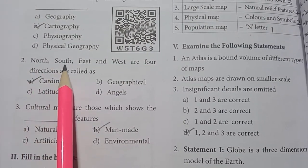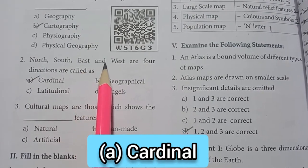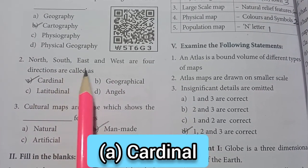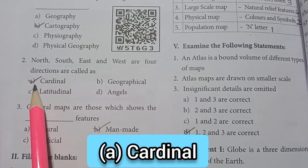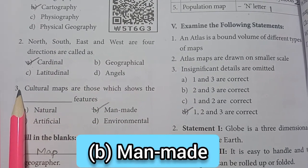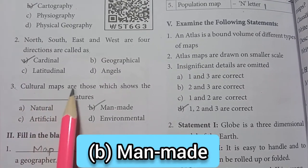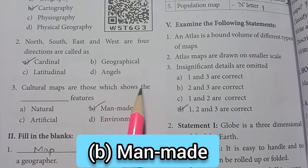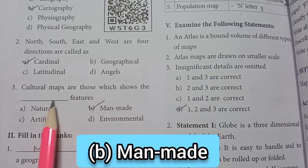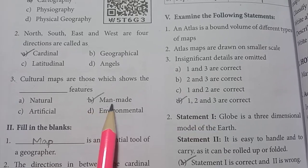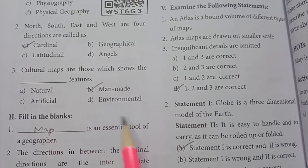2nd: north, south, east and west — the 4 directions are called as — option A: cardinal. 3rd one: cultural maps are those which show the blank features — option B: manmade features.